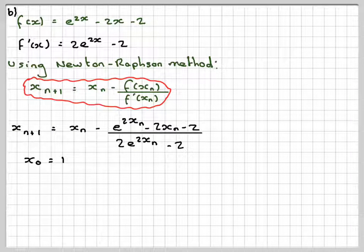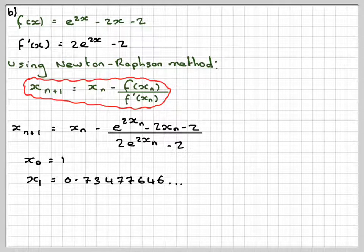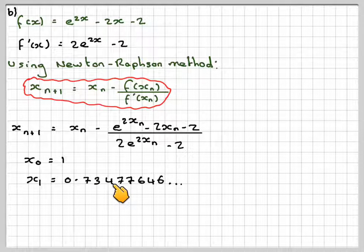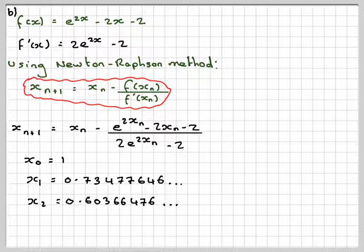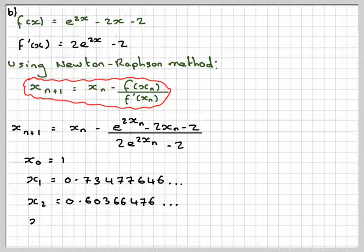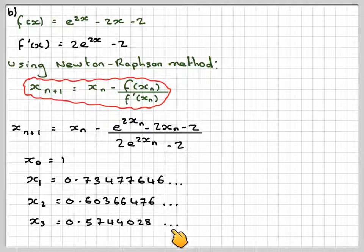Going back to this, we now need to write down each of these answers carefully. Write down the full calculator value. So you've got x1 is 0.7347. x2, the full calculator value, don't forget the three dots. And x3 is 0.5744028.